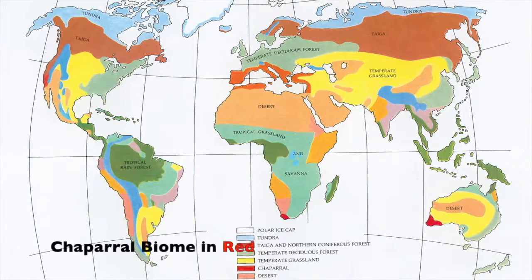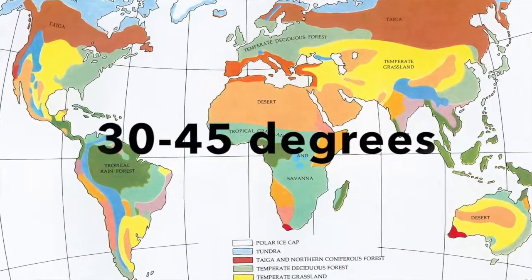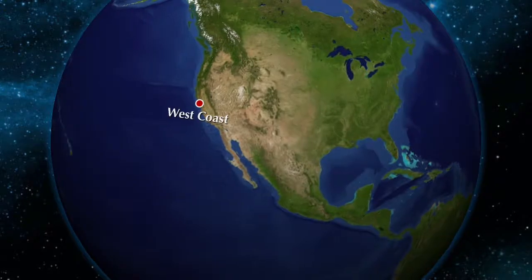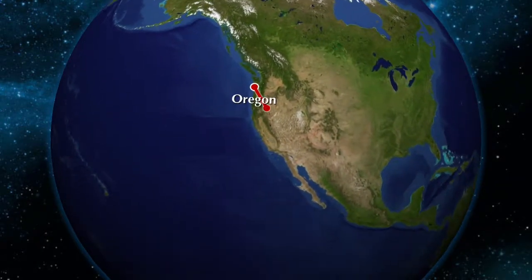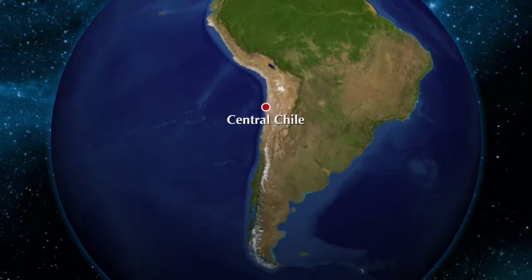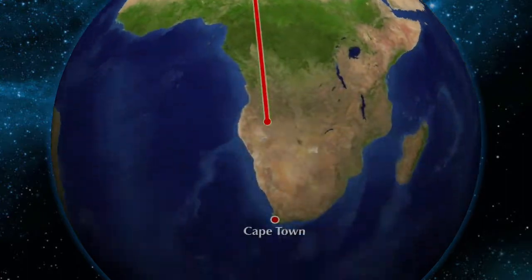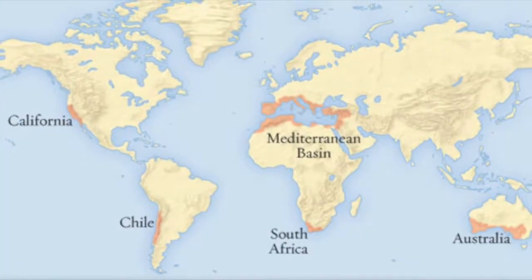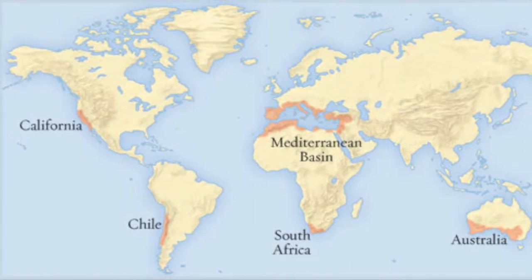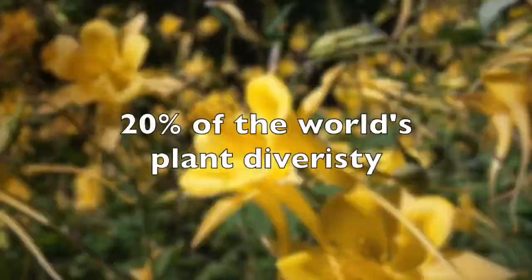These areas are located in continents between 30 and 45 degrees north latitude and include the west coast of the United States such as California and Oregon, the west coast of South America such as Central Chile, the coastal areas of the Mediterranean itself, the Cape Town area of South Africa, and southwestern Australia. These five regions only represent 2% of the world's surface, but they contain nearly 20% of all the world's plant diversity.